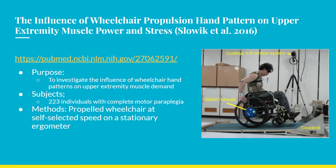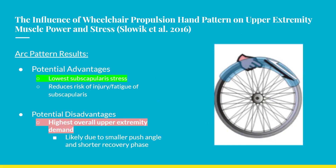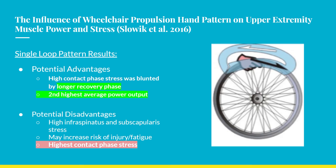The study found that the arc pattern experienced the highest levels of overall upper extremity demand across the full propulsion cycle, likely due to its smaller push angle and shorter recovery phase. Interestingly, the arc pattern also showed the lowest subscapular stress through the push cycle. The single loop pattern experienced the second highest overall demand and second highest average power through the full cycle. Despite having the highest stress in the contact phase, it only ranked second overall because the contact phase was such a small percentage of the full cycle.